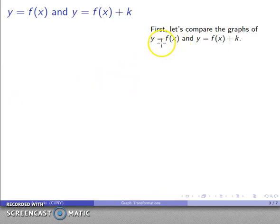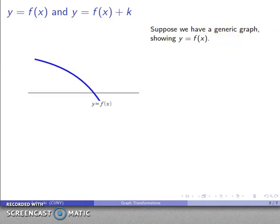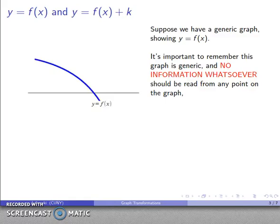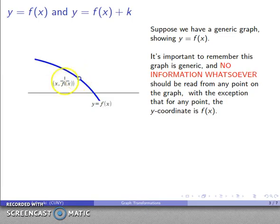To answer this, I want to see what happens when I alter the function slightly and see what happens to its graph. Let's compare y = f(x) and y = f(x) + k, where k is positive. We'll suppose I have a generic graph showing y = f(x). It's very important to remember this graph is generic — we should take no information from any particular point. A point on the graph has coordinates (x, f(x)).